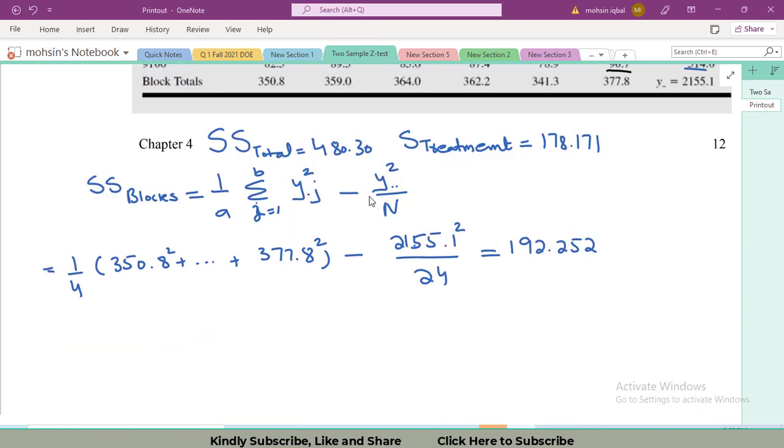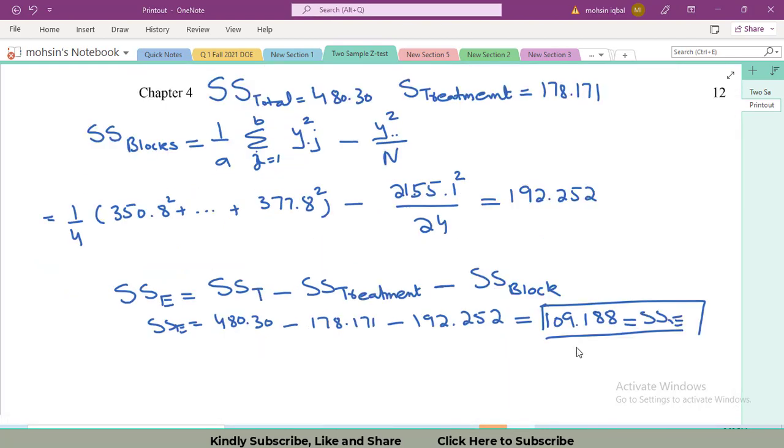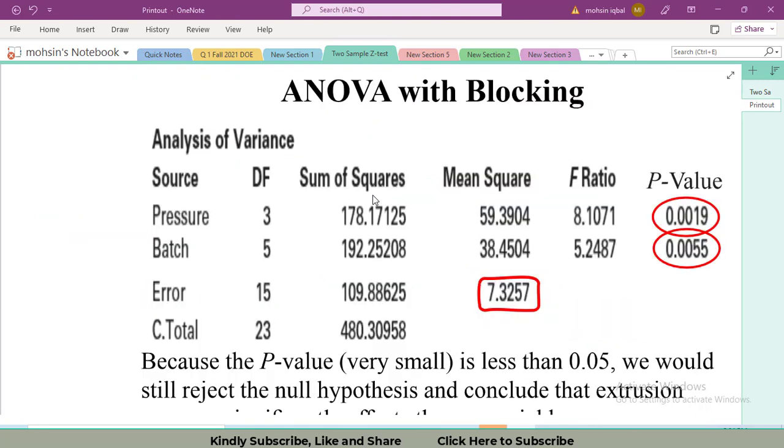Now I will calculate SSE sum of squares error. This sum of squares error is also called pooled standard deviation and can be calculated as sum of squares total minus sum of squares treatments minus sum of squares blocks. Sum of squares error becomes 109.188.